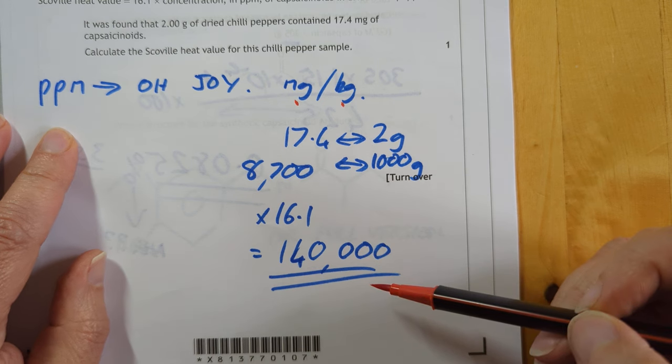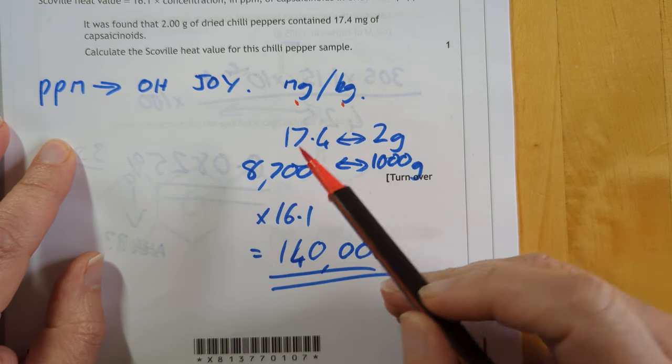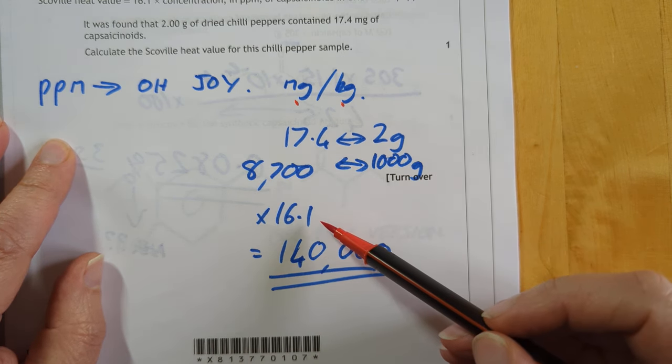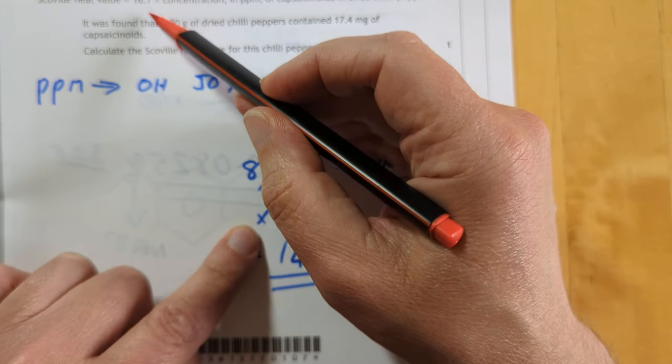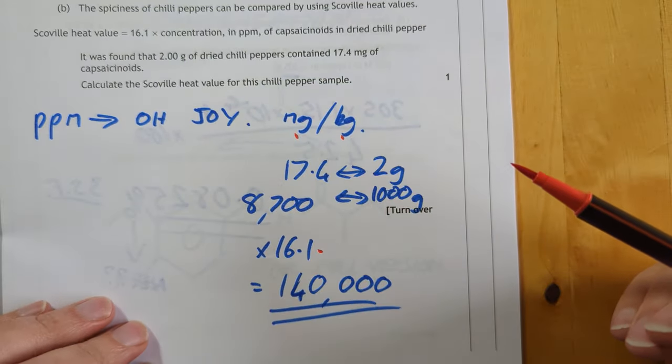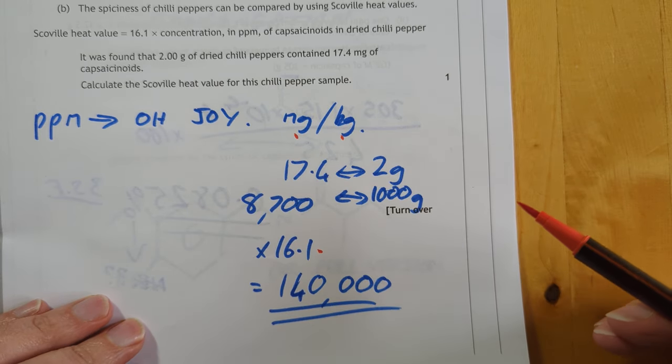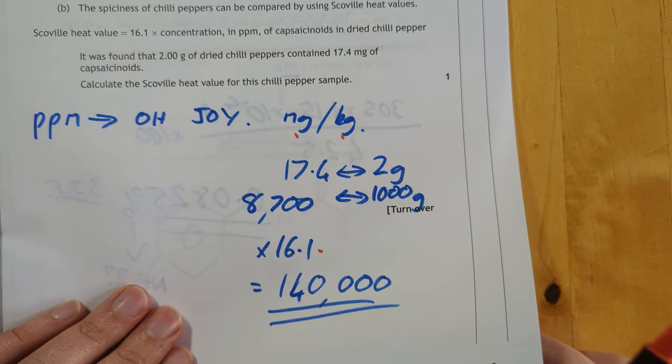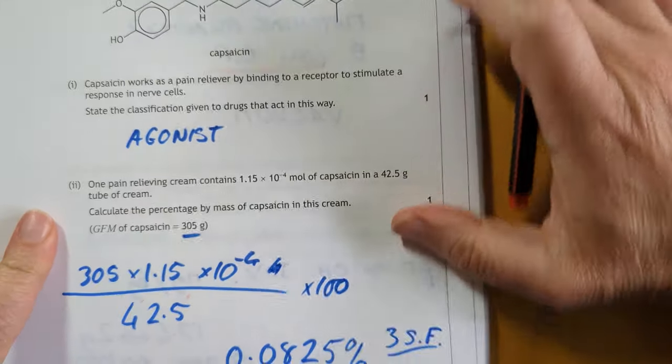One definition is a milligram per kilogram. So what I've done here is I have calculated that and then multiplied up by 16.1. Oh, because it was in the question. That's in the problem-solving root of the question. 140,000 seems a lot, but if you know anything about the Scoville scale, which is a real thing by the way, it's probably about right. I think you can get up to the millions.